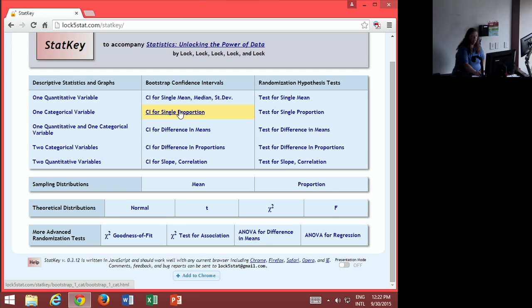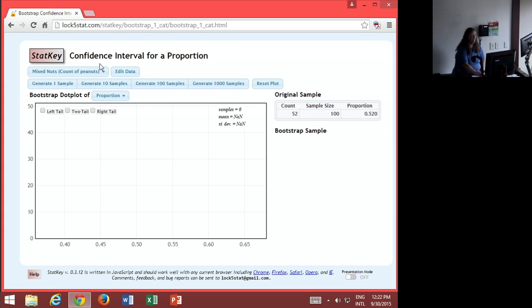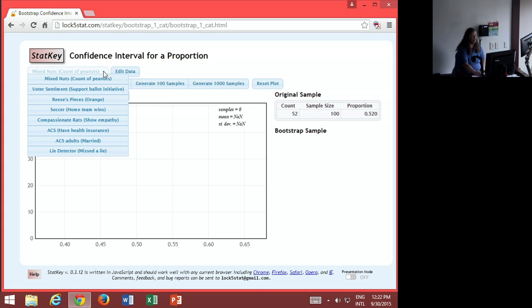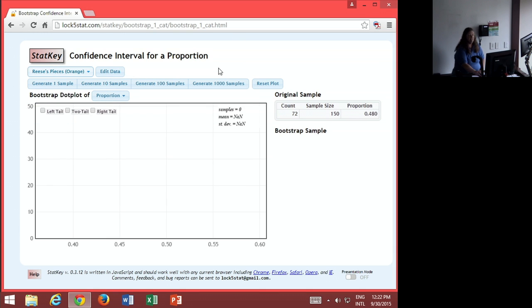So for the Reese's Pieces, we'll do a single proportion and we're going to choose the Reese's Pieces orange. Now this sample is a little larger - this sample has 150, of which 72 are orange, for a proportion of 0.48. So approximately 48% of those 150 pieces are orange.